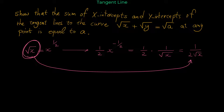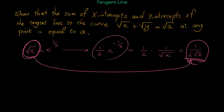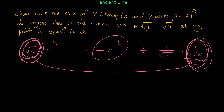The reason I recommend memorizing the derivative of square root of x in this form is that we will see square root, or radicals in general, a lot in derivatives. This form is better because the function is in radical form, and it's better to write the answer also in radical form. So the derivative of radical x is one over two radical x.